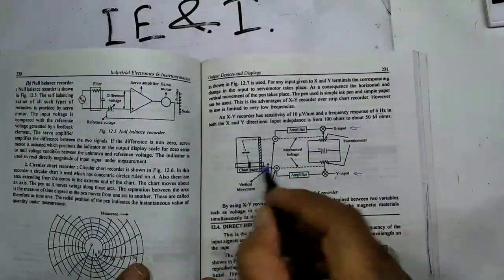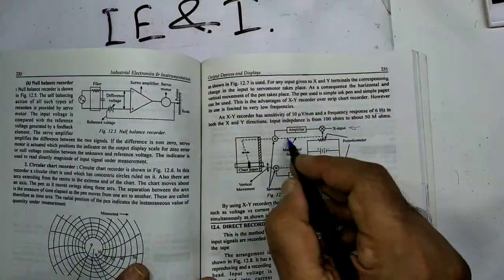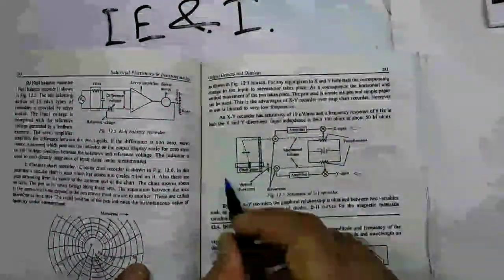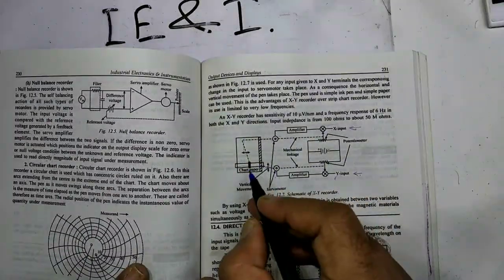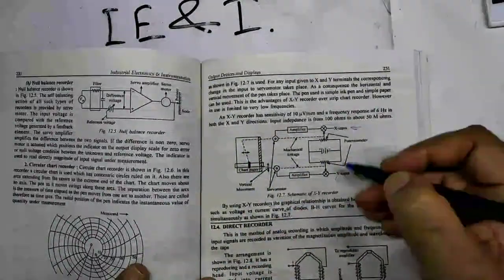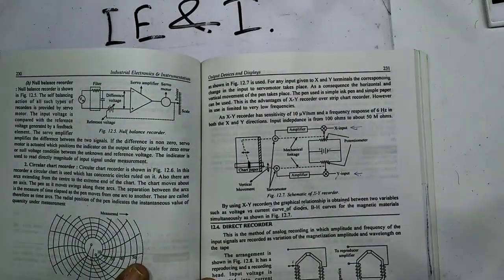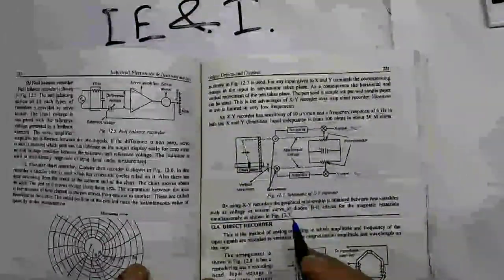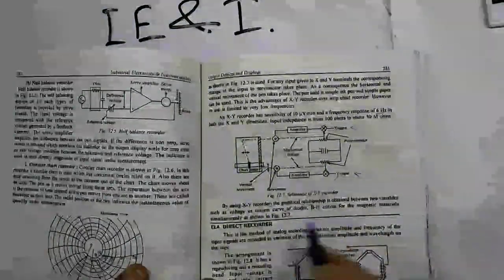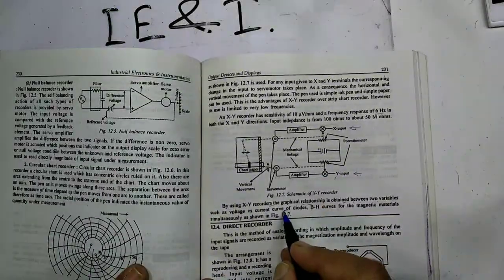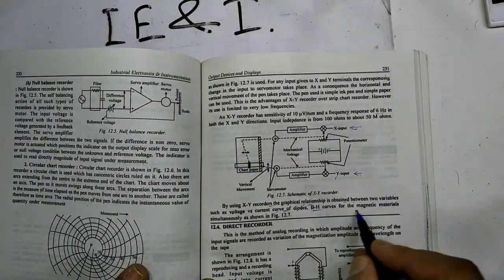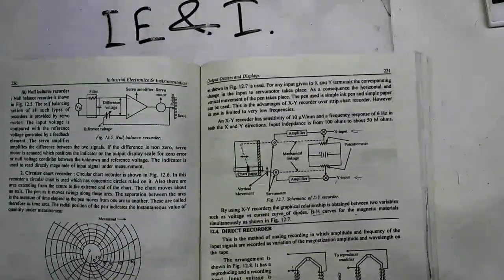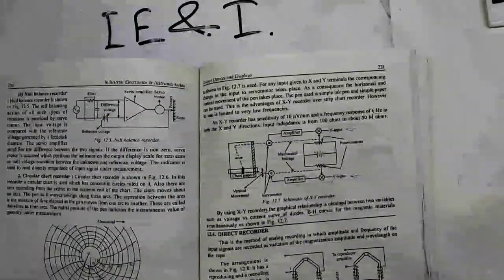The two movements are given as the two inputs and an XY recorder records the output of both X and Y direction. The relationship between two variables can be obtained on the chart, for example, voltage and current relationship curve of the diode. Similarly, B and H curve for the magnetic materials simultaneously. This was the graphic chart recorder and XY chart recorders.